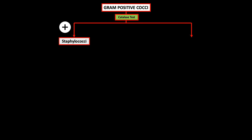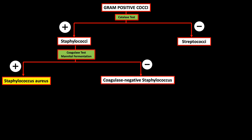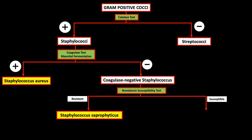In summary, if you get gram-positive cocci, you do the catalase test to differentiate whether it is Staphylococcus species or Streptococcus species. If it is catalase positive, then it is Staphylococcus. If it is catalase negative, then it is Streptococcus. For Staphylococcus, you do the coagulase test. If it is coagulase positive, then it is Staphylococcus aureus. If it is coagulase negative, it is coagulase negative Staphylococcus, like Staphylococcus epidermidis or Staphylococcus saprophyticus. To differentiate the two coagulase negative Staphylococci, you do novobiocin susceptibility testing. If it is resistant, then it is Staphylococcus saprophyticus. And if it is susceptible, then it is Staphylococcus epidermidis.